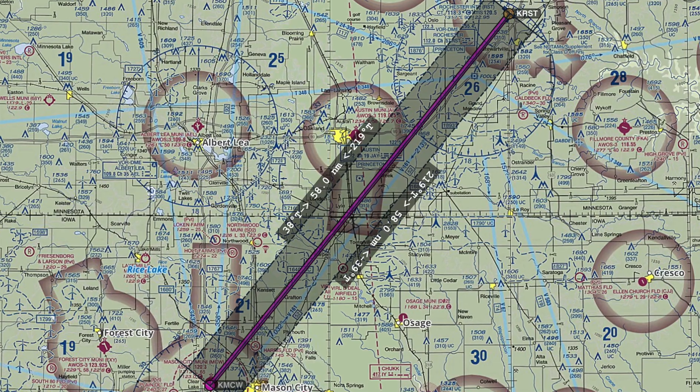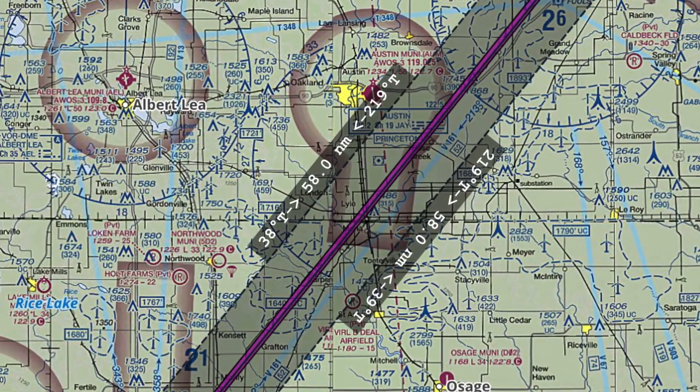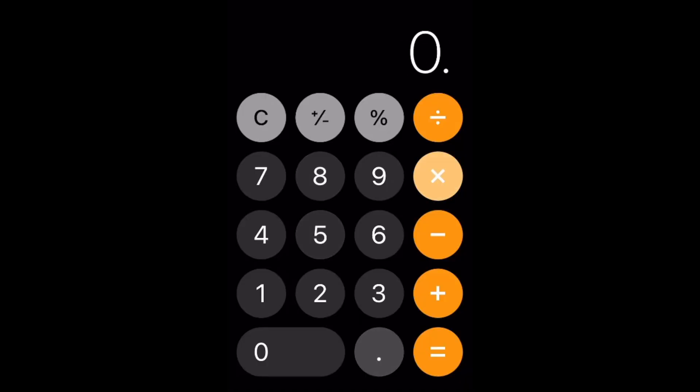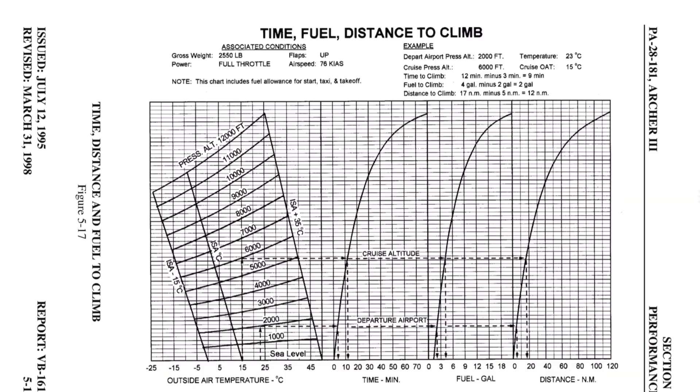The third factor is how far you're going. My rule of thumb is, unless I have to be above a certain altitude to avoid obstacles, I should reach cruising altitude within 30% of the total distance. A quick measurement shows our trip to be 58 nautical miles, so we should reach cruise altitude at no further than 18 nautical miles from KRST. Using the time, fuel, and distance to climb chart backwards for 18 nautical miles shows that at today's temperature of 24 degrees Celsius, we should estimate 5,500 feet as our maximum altitude.